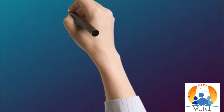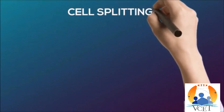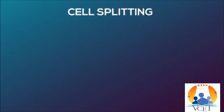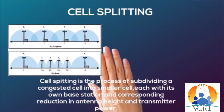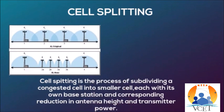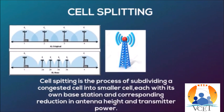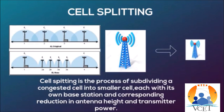Cell splitting is the process of subdividing a congested cell into smaller cells. Each smaller cell has its own base station, and there is a reduction in antenna height and transmitted power due to splitting.